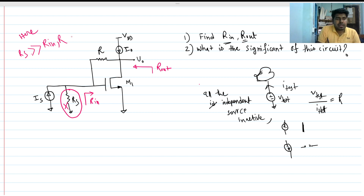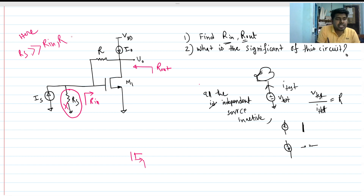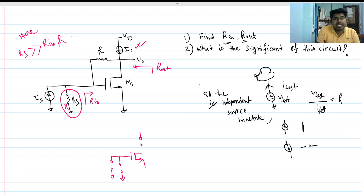To find impedance, independent sources are inactive. Here we have our MOSFET. R_s is assumed to be very high impedance, so it acts as an open circuit. The independent current source is also open circuit, and V_DD is grounded as it is an independent voltage source. This leaves us with the MOSFET and resistor R in the circuit.